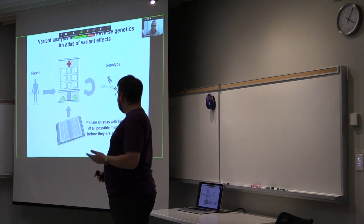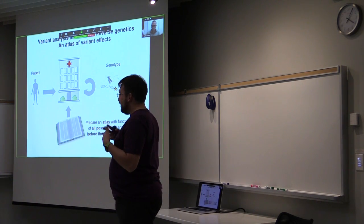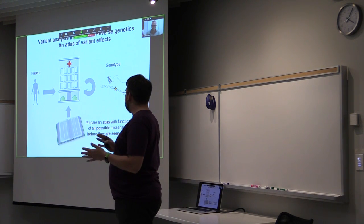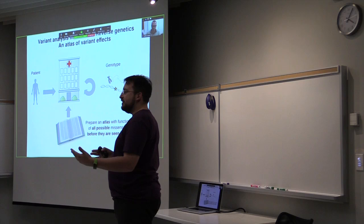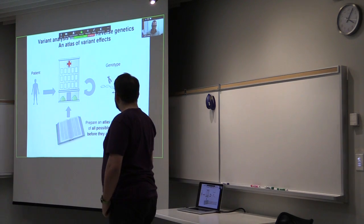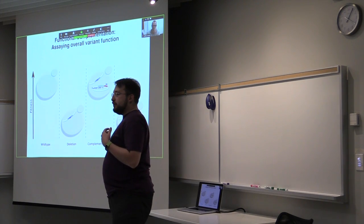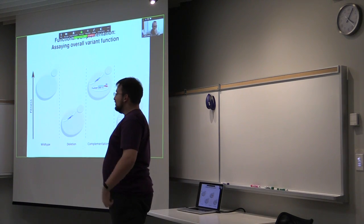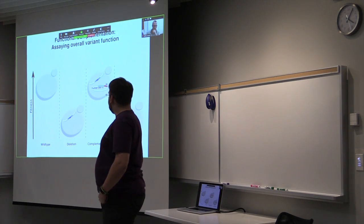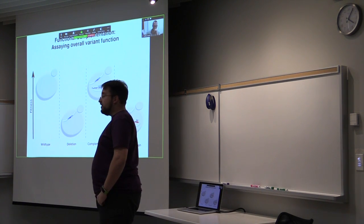So what if we could instead prepare an atlas of the functional impacts of all possible missense variants before they are even seen in the clinic that are supported with laboratory evidence? To do that, we would need an assay that we can scale to the appropriate size. And our current favorite for this is functional complementation in yeast.